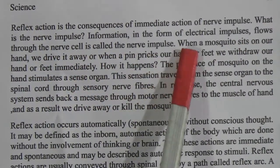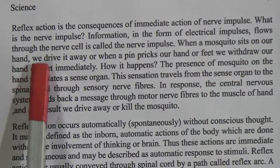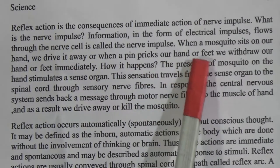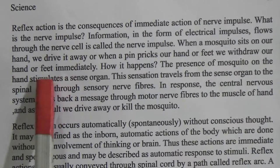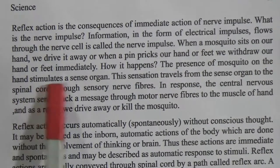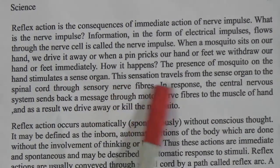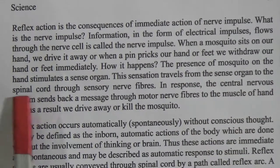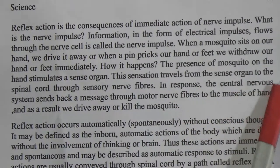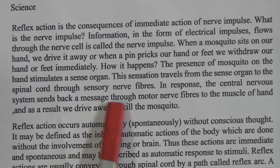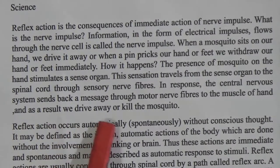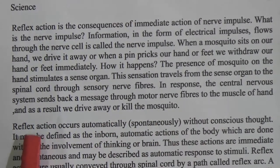What is nerve impulse? The information in the form of electrical impulse flowing through the nerve cell is called the nerve impulse. When a mosquito sits on our hand we drive it away, or when a pin pricks our hand or feet we withdraw our hand or feet immediately. The presence of a mosquito on the hand stimulates a sensation. The sensation travels from the sense organ to the spinal cord through sensory nerve fibers, and in response the central nervous system sends back a message through motor nerve fibers to the muscle of the hand.